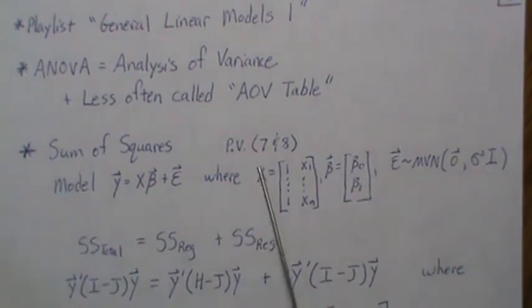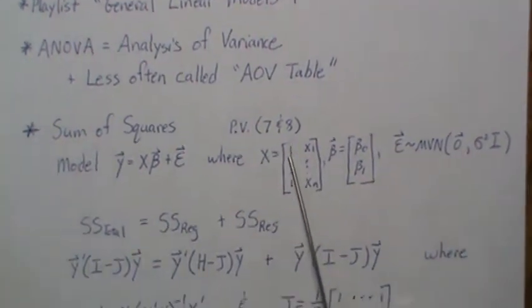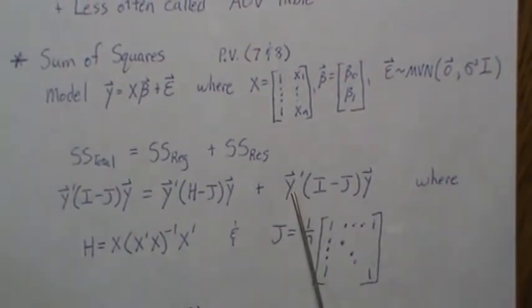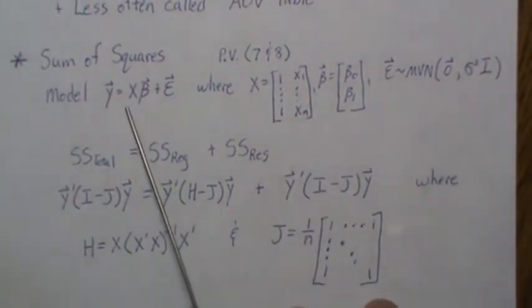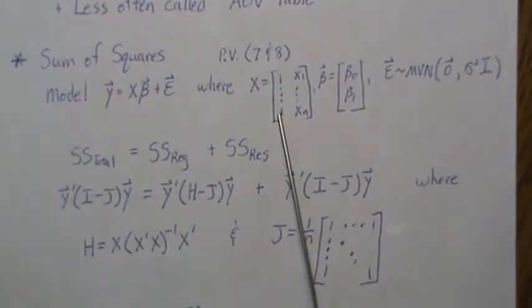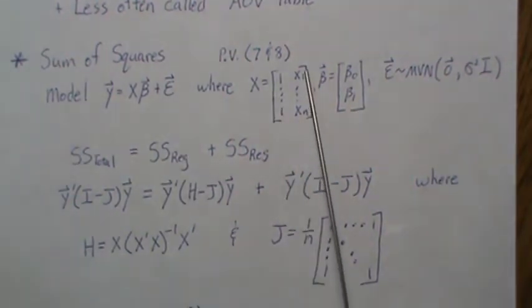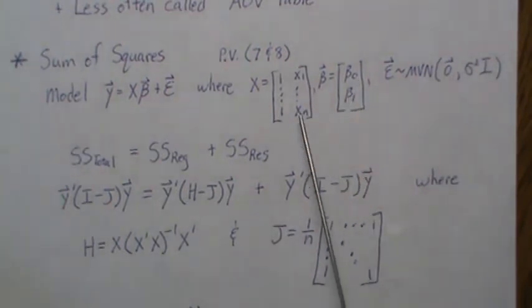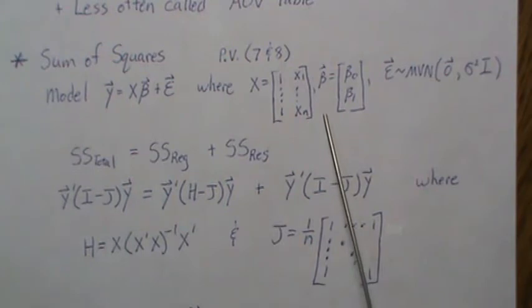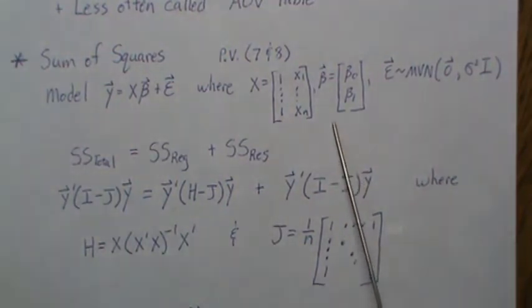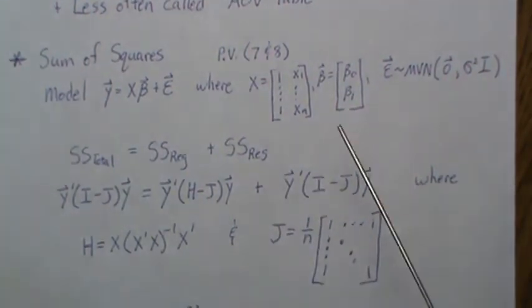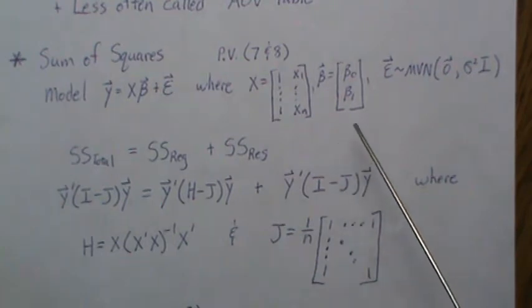In videos seven and eight in this playlist we partitioned the sums of squares. Our model is a linear model where the data matrix has a column of 1s and x₁ through xₙ — two parameters — so it's a simple linear regression setting. We're also going to look at the distributional properties of these sums of squares, which means we have to assume some distribution.